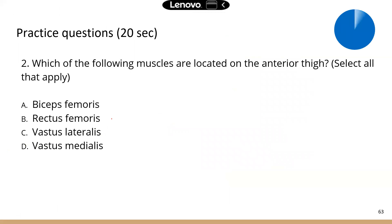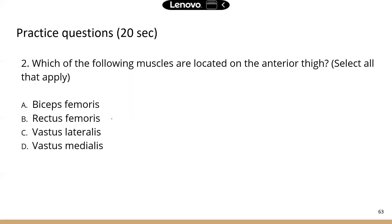Next practice question: which muscles are located on the anterior thigh? This asks about the quadriceps — the four major muscles on the anterior thigh. We'll focus on the three superficial ones: rectus femoris in the middle, vastus lateralis on the lateral side, and vastus medialis on the medial side. Biceps femoris is on the posterior of the thigh — it's one of the hamstring muscles, not a quad.